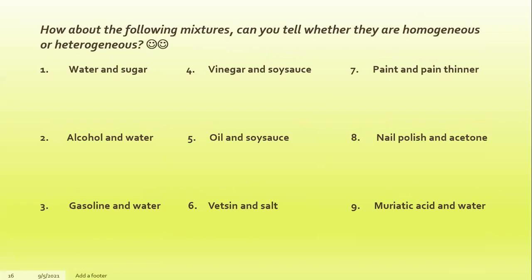Let's check if the following combinations form a homogeneous or heterogeneous mixture. Number one: water and sugar. Two: alcohol and water. Number three: gasoline and water. Four: vinegar and soy sauce. Five: oil and soy sauce. Six: vetsin or MSG and salt. Seven: paint and paint thinner. Eight: nail polish and acetone. And nine: muriatic acid and water.